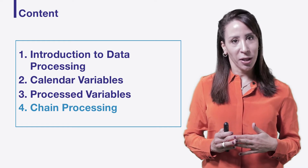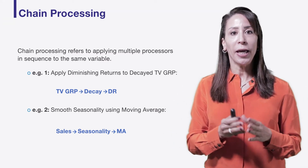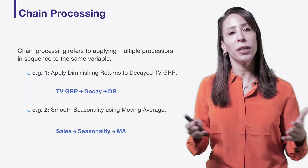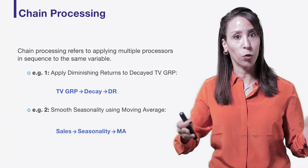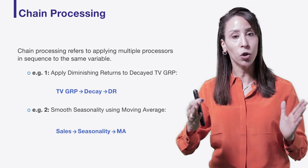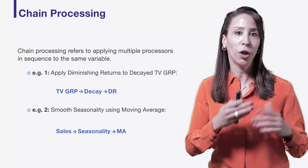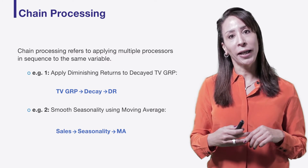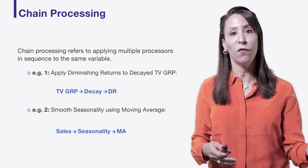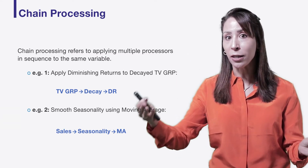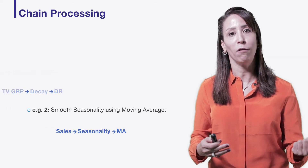Chain processing is about applying different processors in sequence to the same raw or calendar variable. A typical example in marketing mix modeling is to take TV spend or GRP, apply the decay function to create adstock, and then apply a diminishing returns processor on top of that adstock — enabling optimization over TV, outdoor, search, and so on. A second example is seasonality: you create a seasonal factor, then smooth it using a median filter or moving average, giving you a nice shape to use as an explanatory variable inside your model.